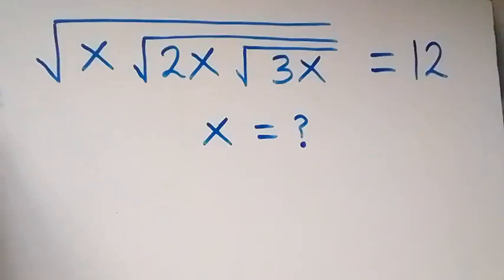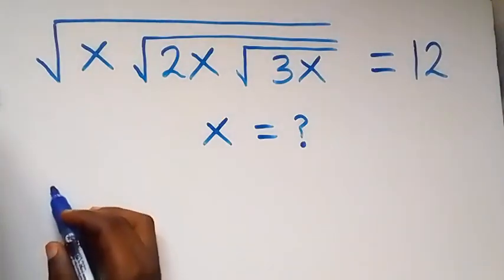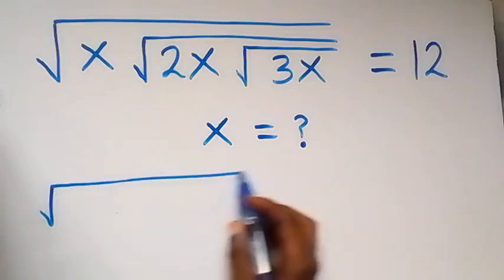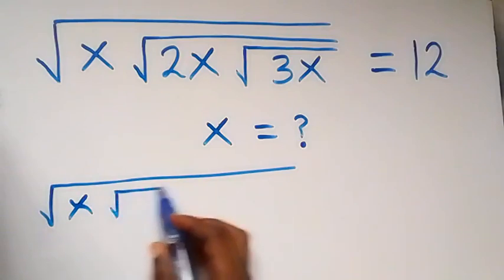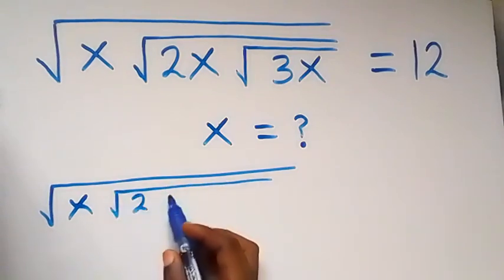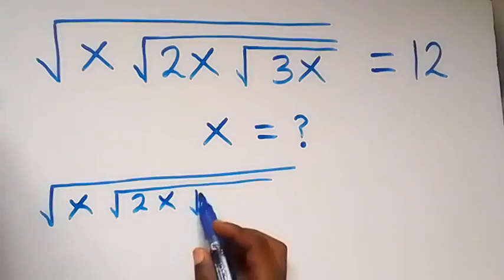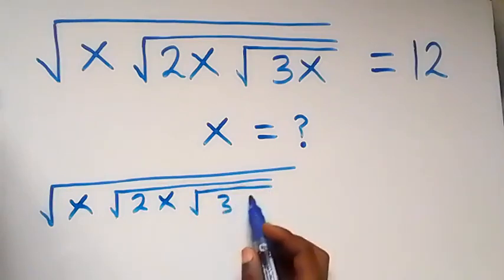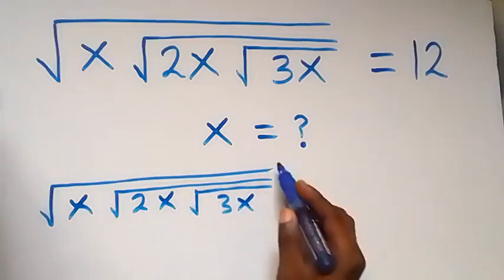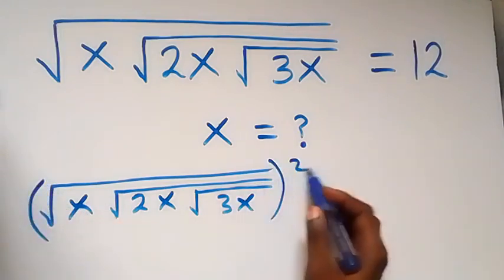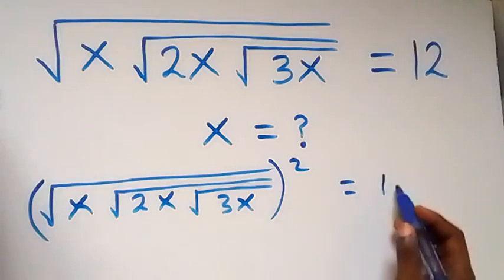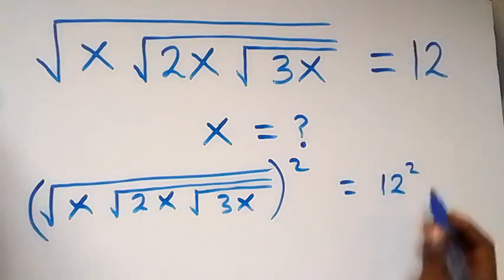Hello, you're welcome. How to solve for x in this nice math problem. From what is given, we can square both sides, and we have square root of x, then inside that we have square root of 2x, then also square root of 3x, all squared, which is equal to 12 squared on this side.